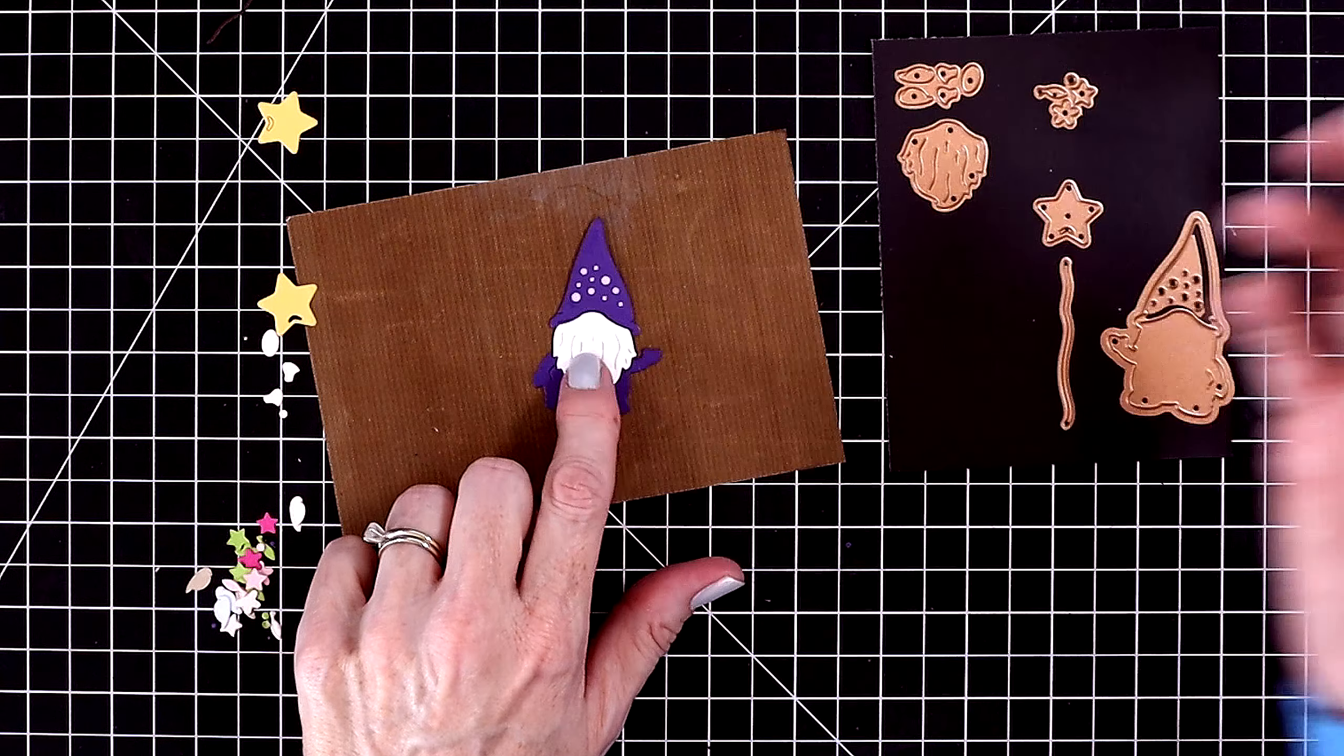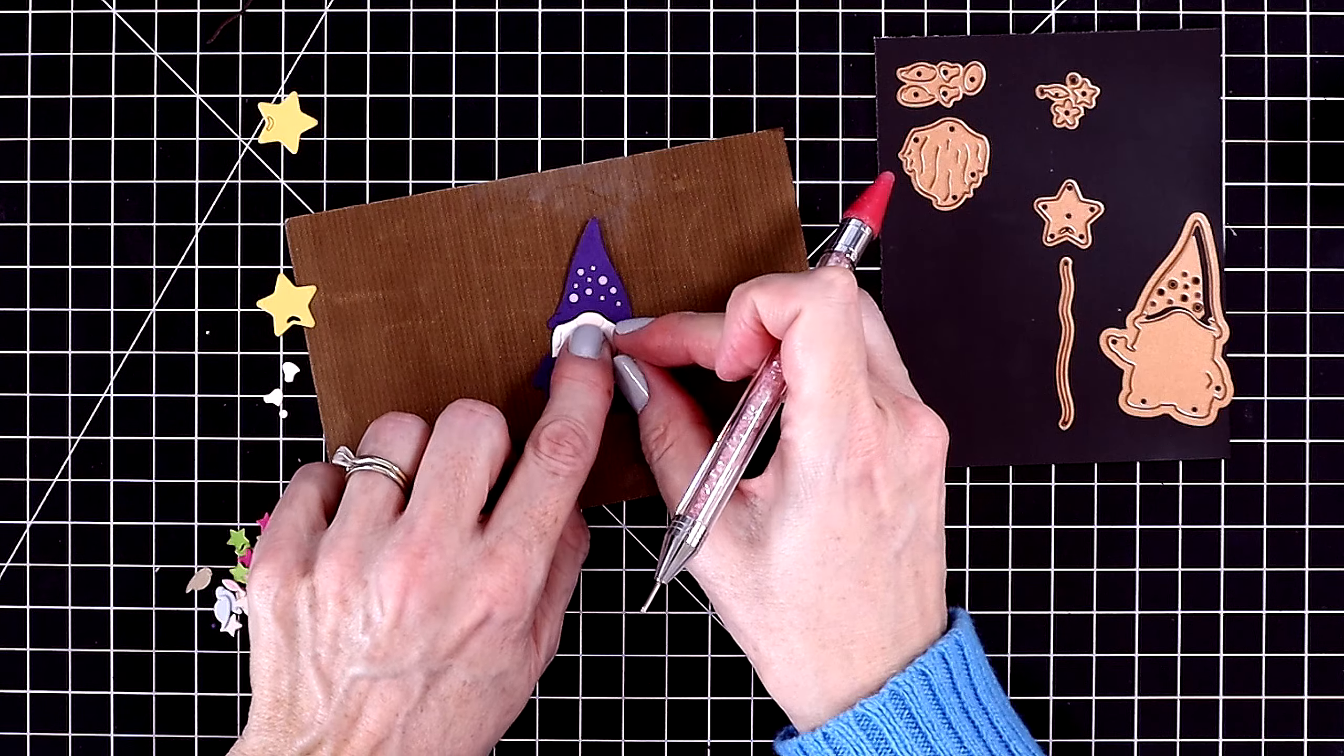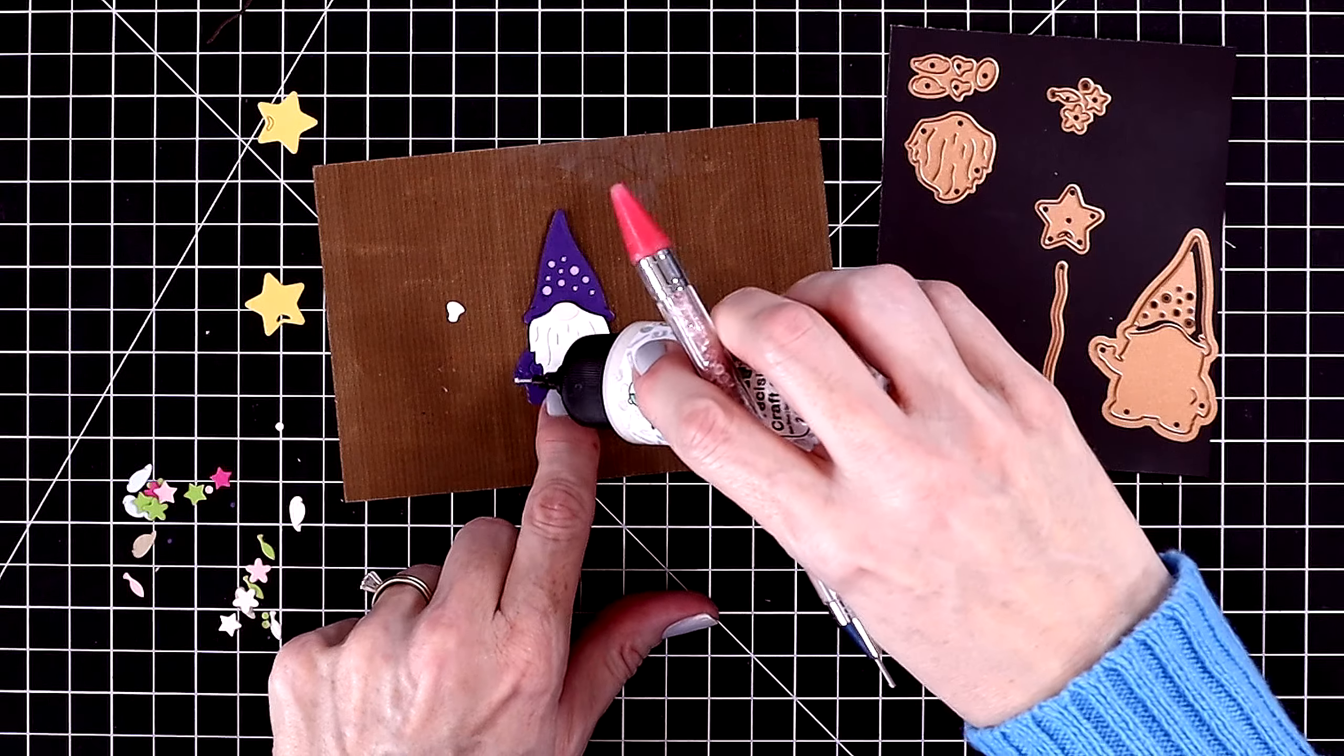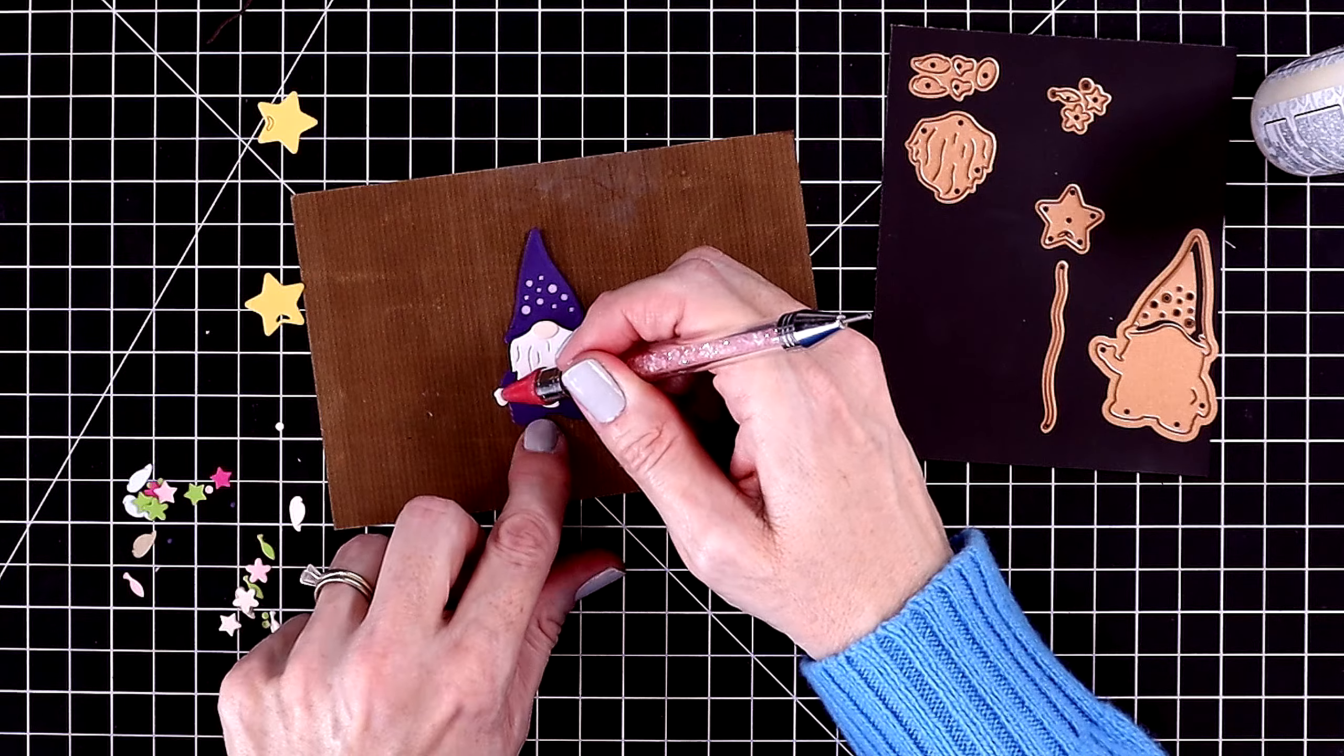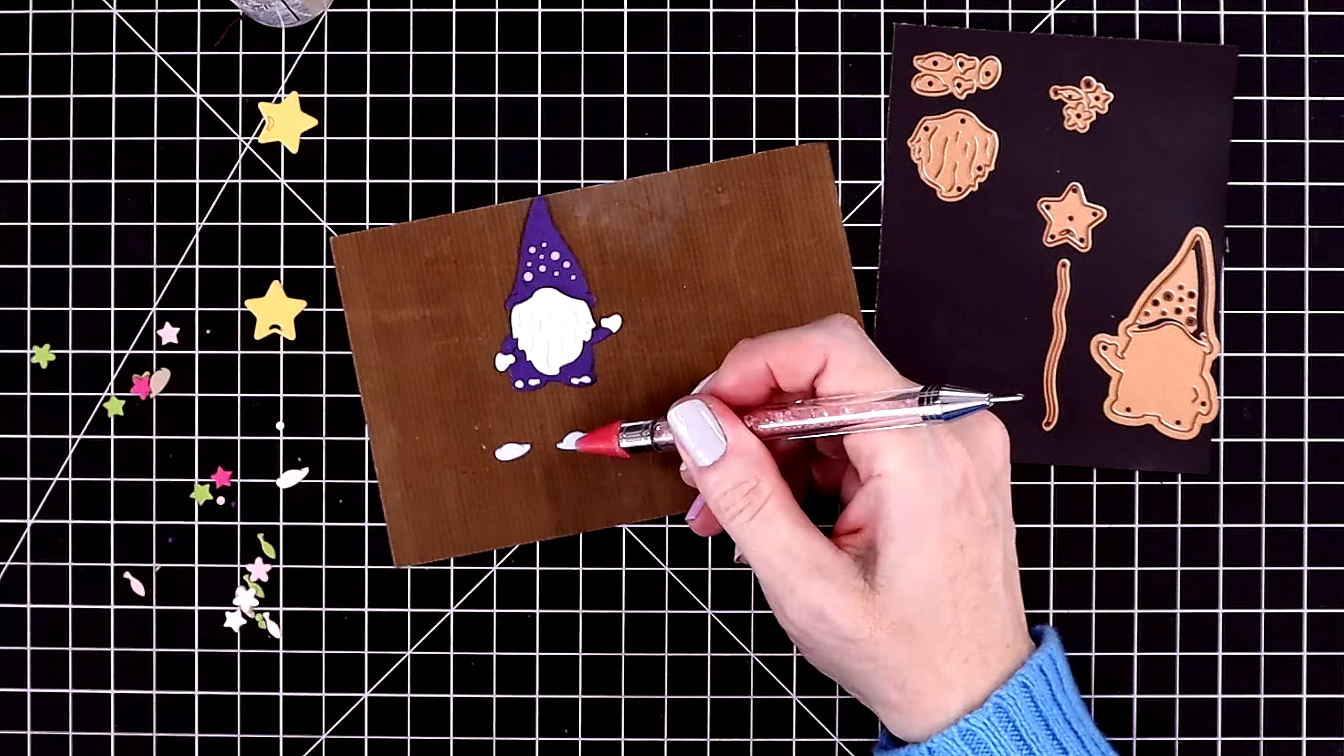I cut out his beard with some white cardstock and it has some really neat etched details so that it looks like hair. His nose I cut out with some alabaster cardstock, as well as his hands. Let's go ahead and glue those on. This is such a cute layering die set. He looks very much like a cute little wizard gnome.